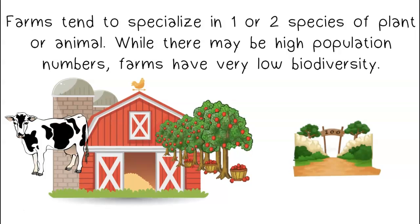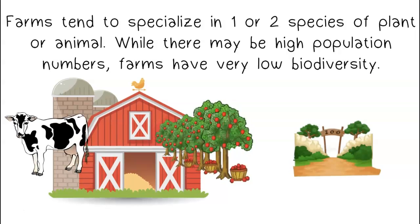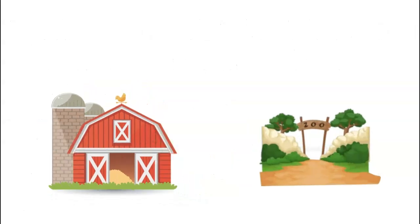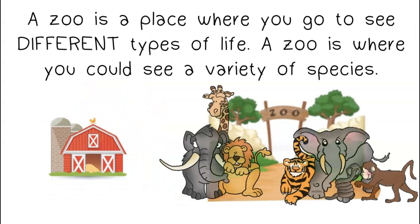Farms tend to specialize in one or two species of plant or animal. While there may be high population numbers, farms have very low biodiversity. A zoo is a place where you go to see different types of life — a variety of species.